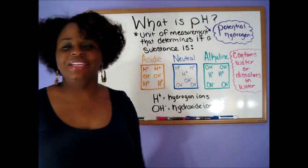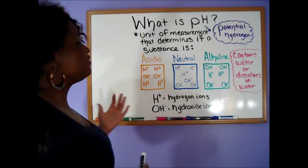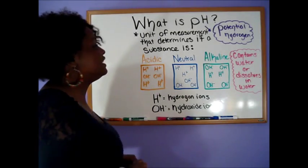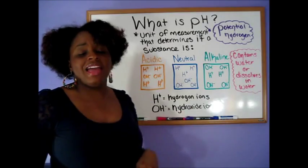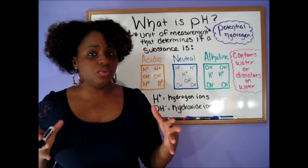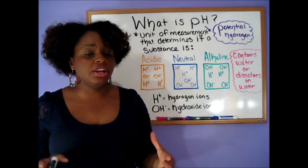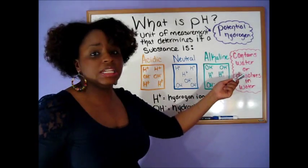So what is pH? Well, pH stands for potential hydrogen and it is the unit of measurement that determines if a substance is acidic, neutral, or alkaline. Now in order for a particular substance to be tested for its pH, it must contain water or must be able to dissolve in water, which is what I have right here.